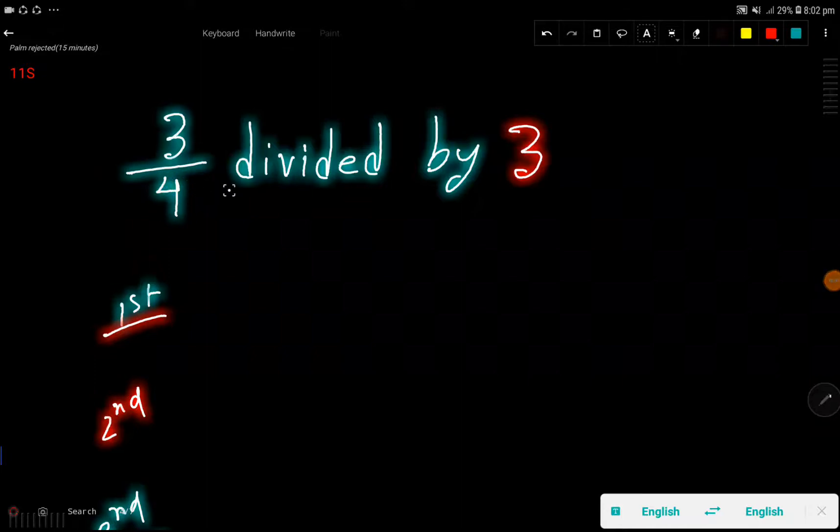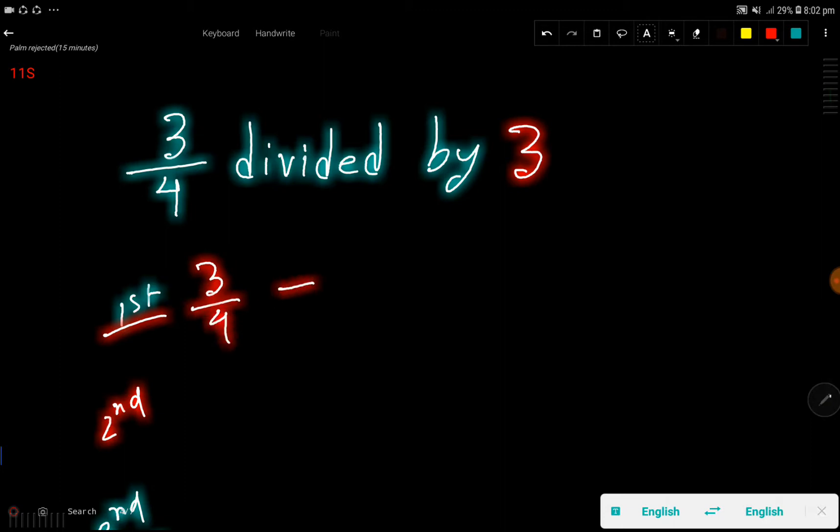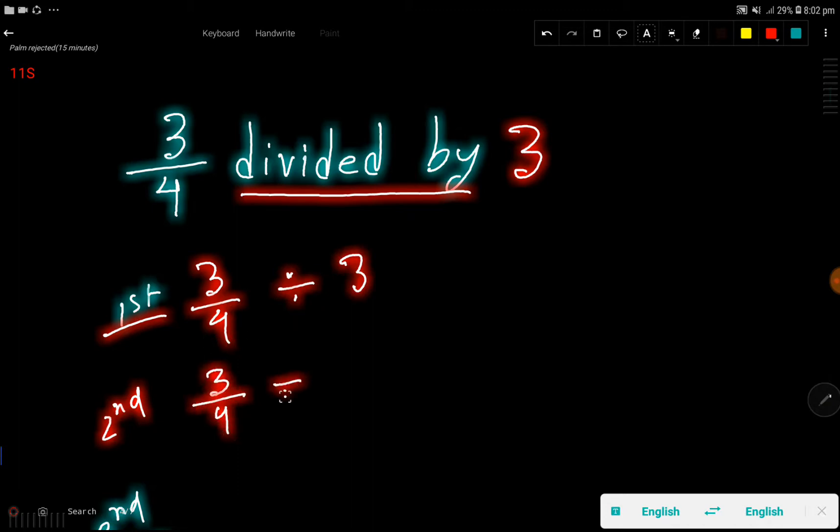3 by 4 divided by 3. Okay, so at first step I will translate this thing: 3 over 4 divided by means this sign, then 3. Then I will rewrite this: 3 over 4, division sign, 3 over 1.